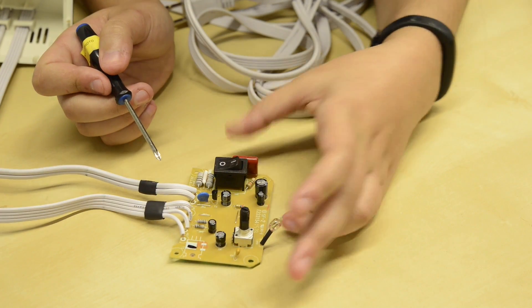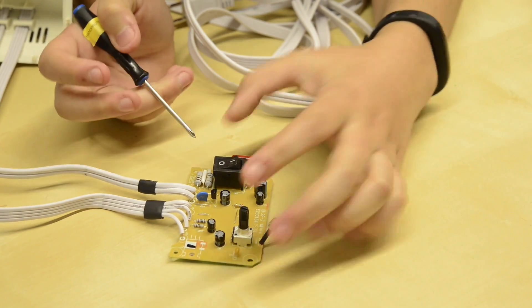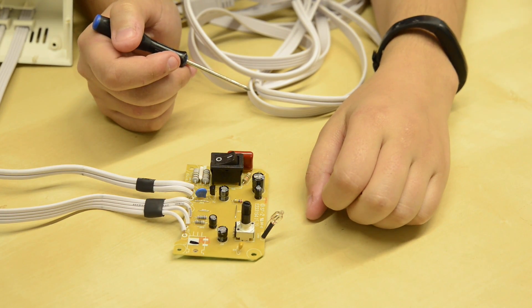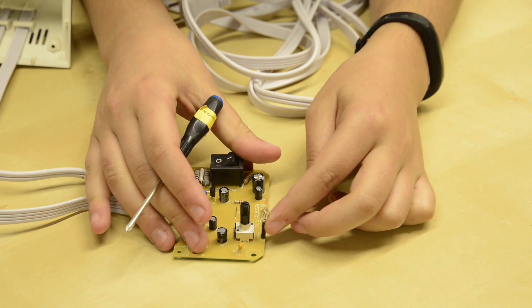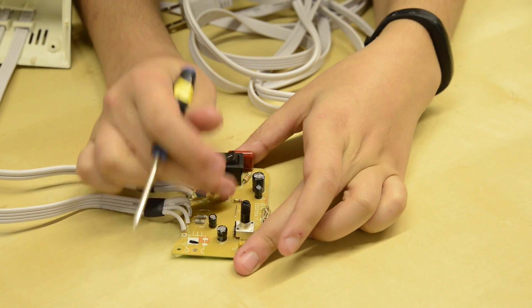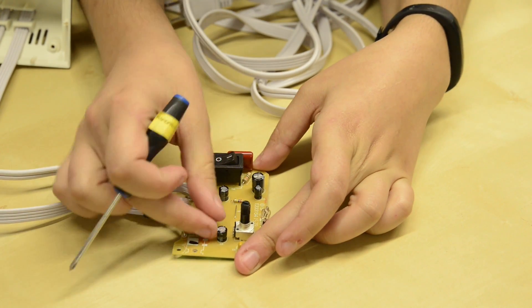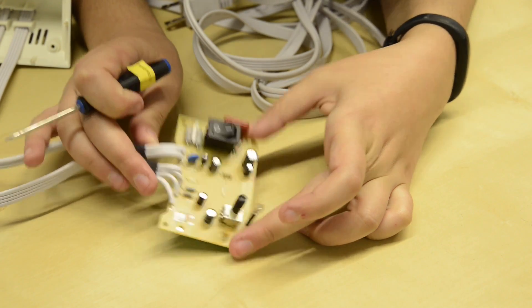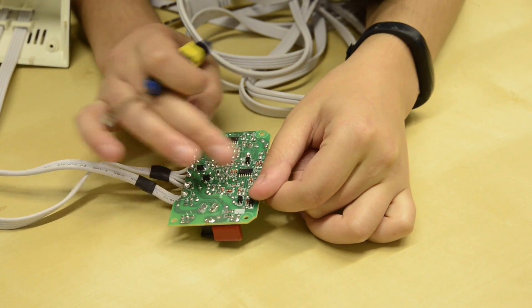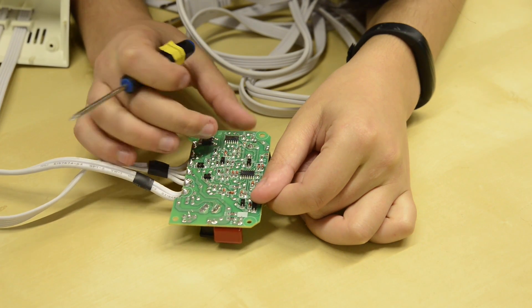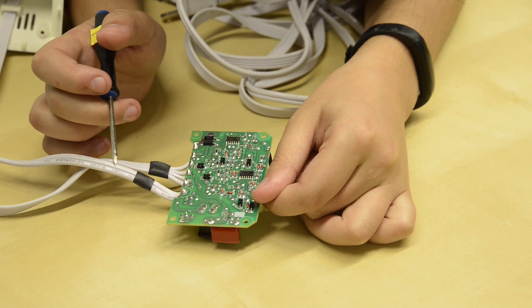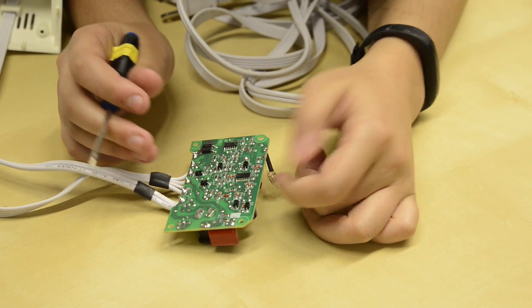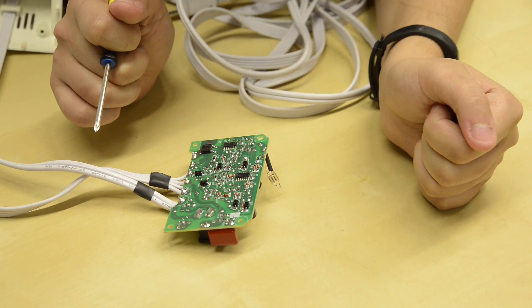Looking at everything, I don't see any capacitors that are poofy or anything like that. Everything looks like it's functioning. I don't see any burn marks on any of these things. So I'm going to say that maybe changing out the fuse will fix our circuit.